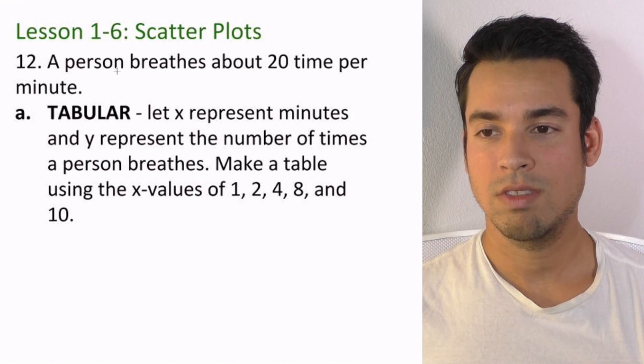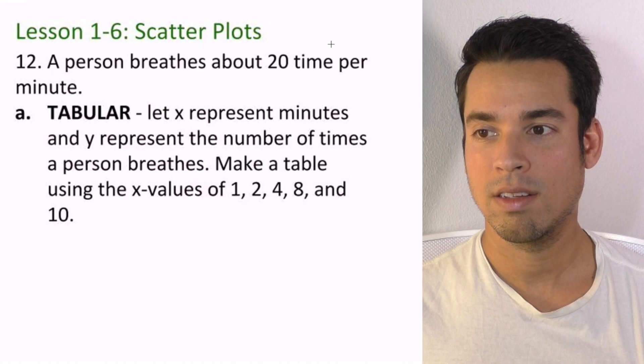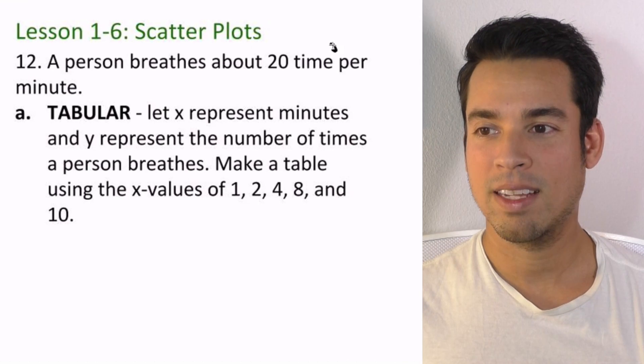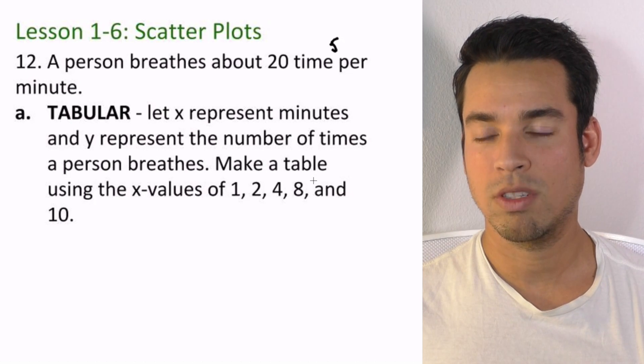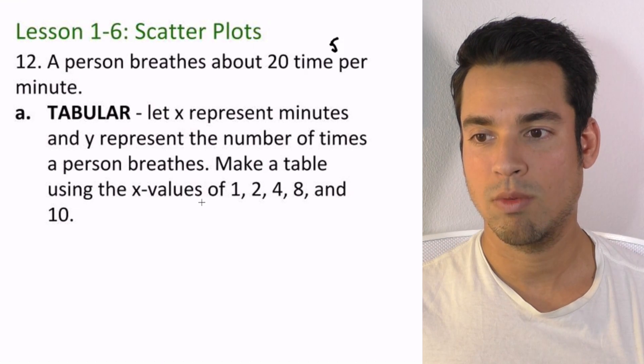Okay, let's go to our final question here, number 12. So it gives us this information: a person breathes about 20 times per minute. Let x represent minutes and y represent the number of times a person breathes. Make a table using the x values of 1, 2, 4, 8, and 10. All right, let's do that real quick.